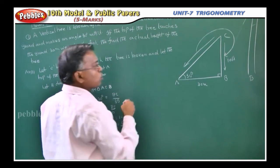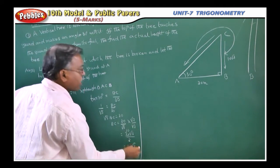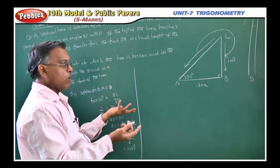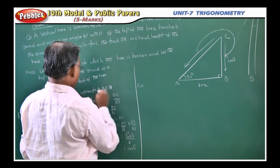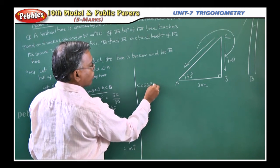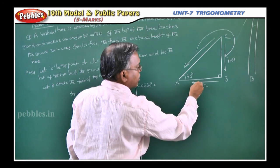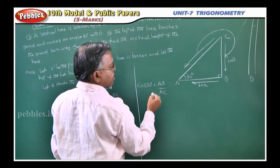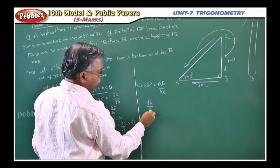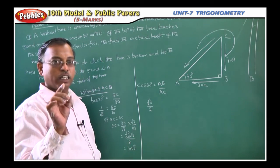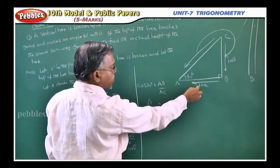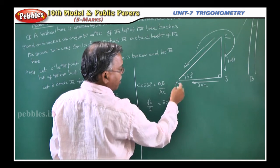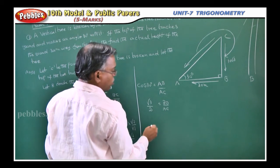What about this part? That part also have to do. For that, either you can take cos theta or sin theta. Once you know this value, sin you can take or cos also you can take. Now cos 30 is equal to adjacent side. This is the adjacent side, this is hypotenuse. Adjacent side is AB, hypotenuse is AC. Cos 30, what is the value? Root 3 by 2. Cos 30 root 3 by 2 is equal to AB, AB value 30, by AC.